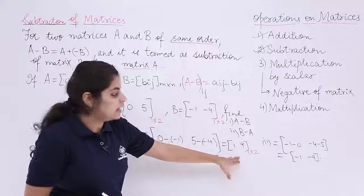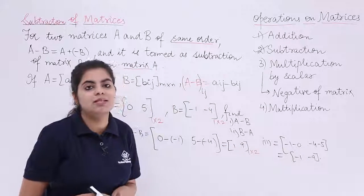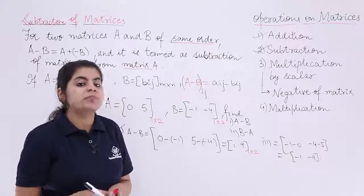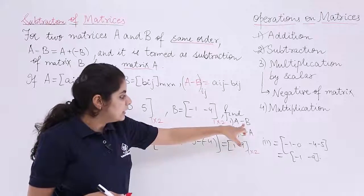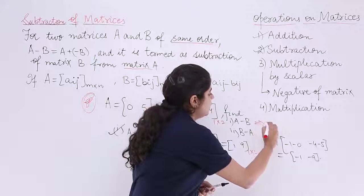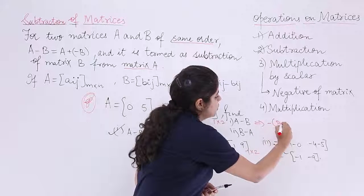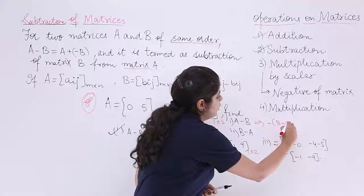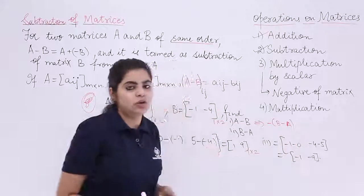Here it was 1 and 9. Here it is minus 1 minus 9. So do you see the difference? The difference is very simple that if you find A minus B and then you see that B minus A is what? It is just the negative. So this is also a property which we will be taking up later on.